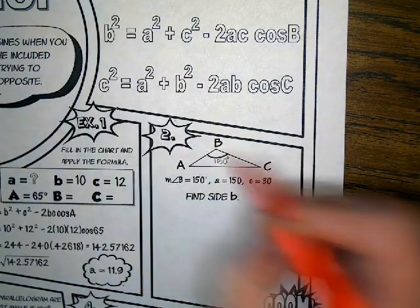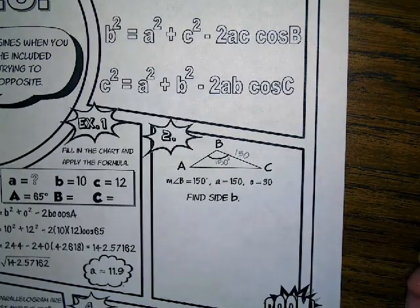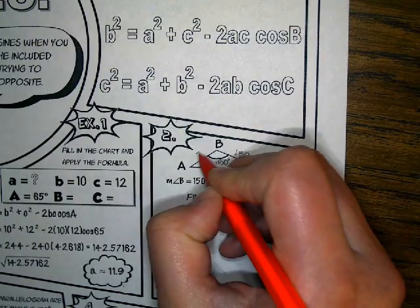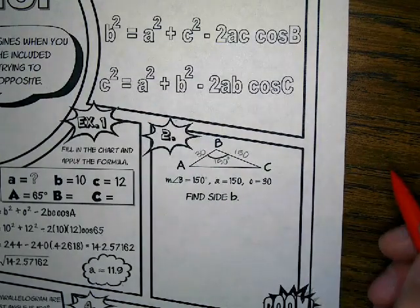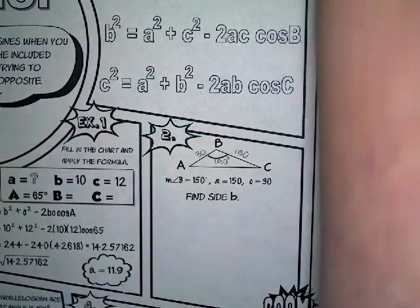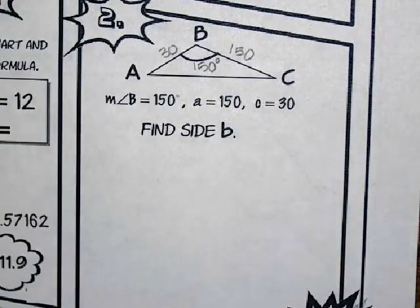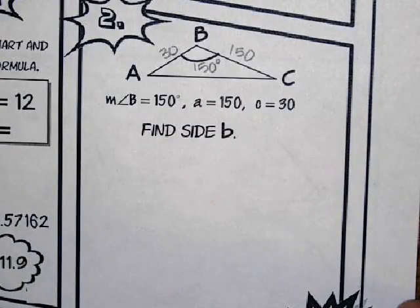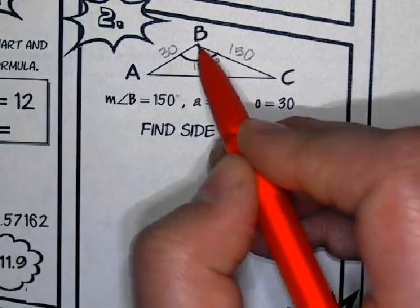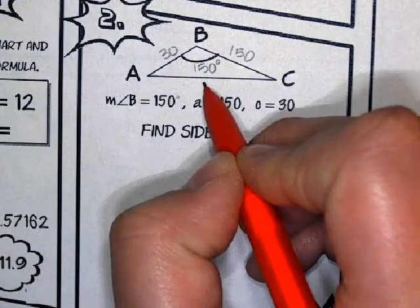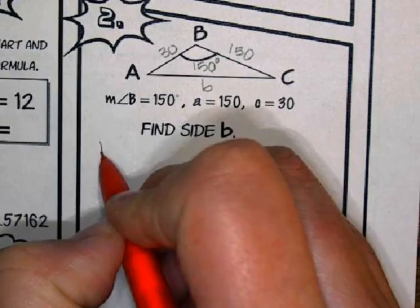They told us that side A was 150 as well — just not degrees, it's whatever length that is. Side C is 30. They only tell us to find side B, but I'm actually going to have us solve the triangle because I want us to do more than just find one side. So the first thing we're going to do, since we have side-angle-side information, is solve for the missing side first — side B. So I'm going to say B squared equals...